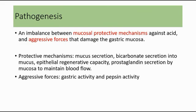The pathogenesis of peptic ulcer disease happens due to an imbalance between the mucosal protective mechanisms against gastric acid and the aggressive forces that damage the gastric mucosa. Protective mechanisms include mucus secretion, bicarbonate secretion, epithelial regenerative capacity, and prostaglandin secretion by the mucosa. The aggressive forces are gastric acid and pepsin activity. When the aggressive forces are higher than the protective mechanisms, there is damage to the gastric mucosa, causing peptic ulcer.